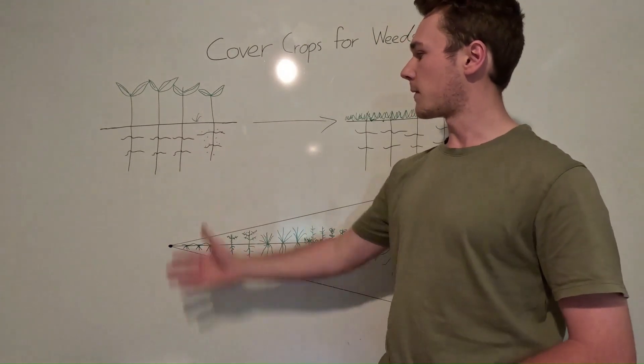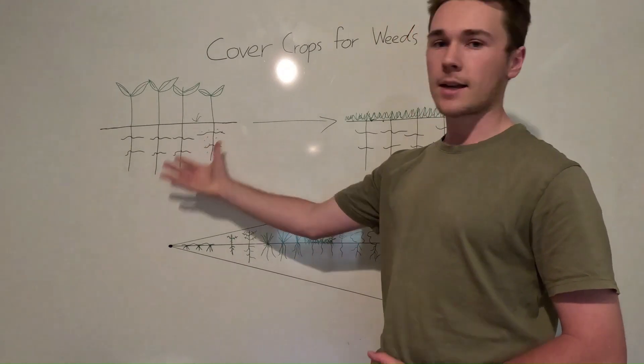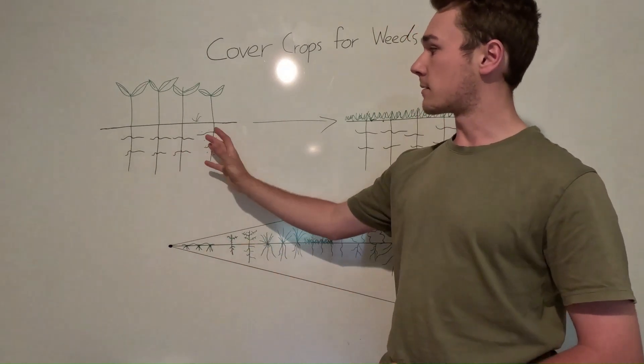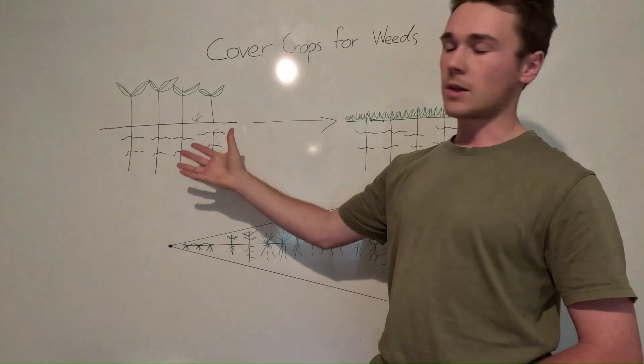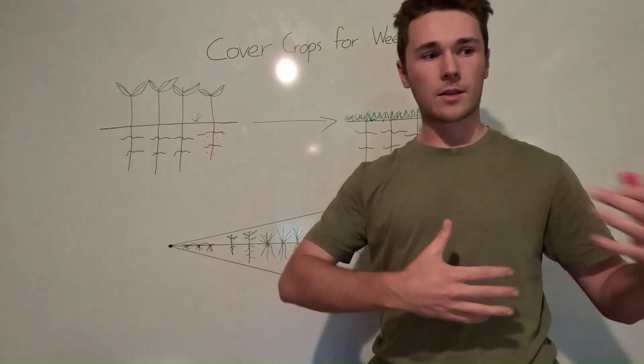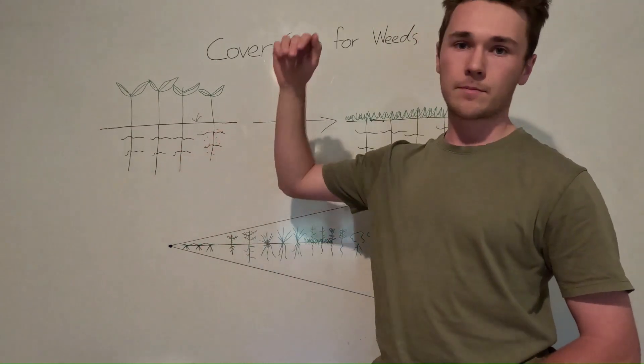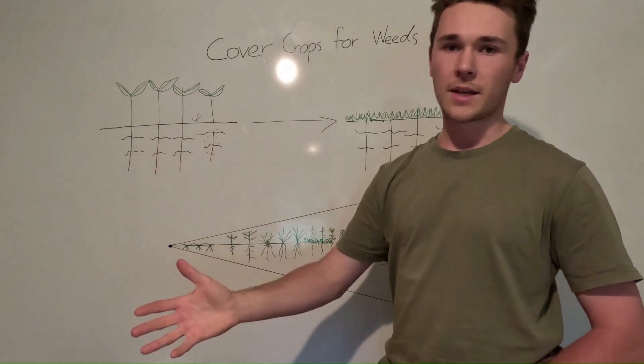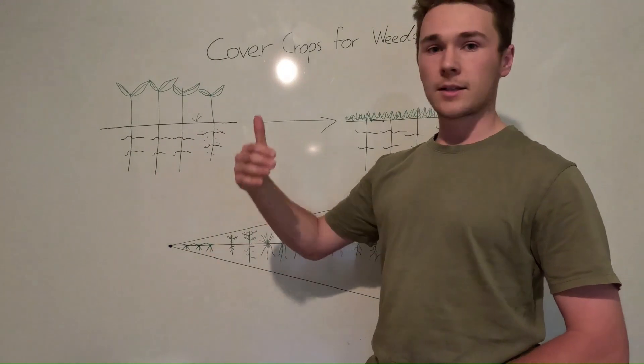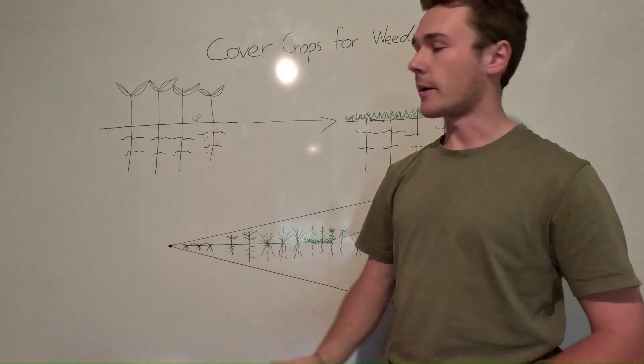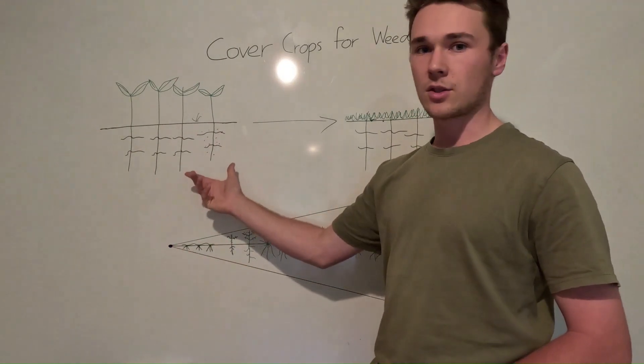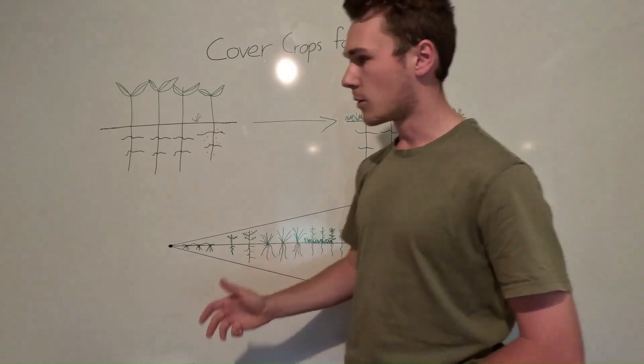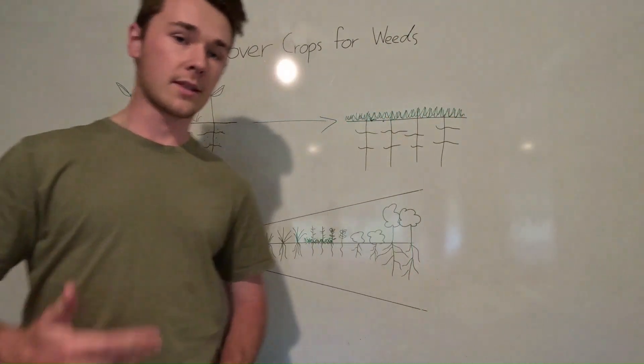So for example, if this soil was really hard and compact, grasses probably won't have a very good time growing there, but a plant with a deep taproot would be able to push through that compaction layer and access better soil. And so that plant should out-compete whatever we're growing if it's more favorable to that condition. And so this comes back to the idea of ecological succession.